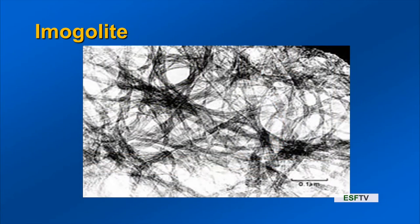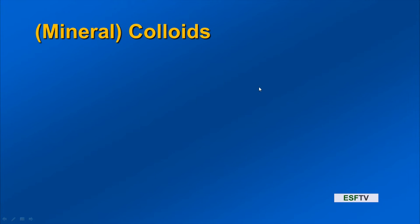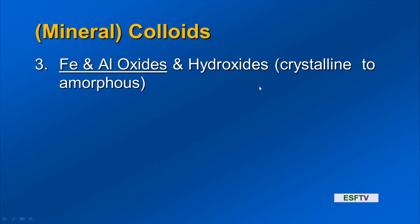Here is imogolite, referred to as paracrystalline. You can see there's order in one direction — these kind of tubes — and it has slightly increased order compared to allophane. The third group of mineral colloids is iron and aluminum oxides and hydroxides. These range all the way from crystalline to amorphous or shapeless.